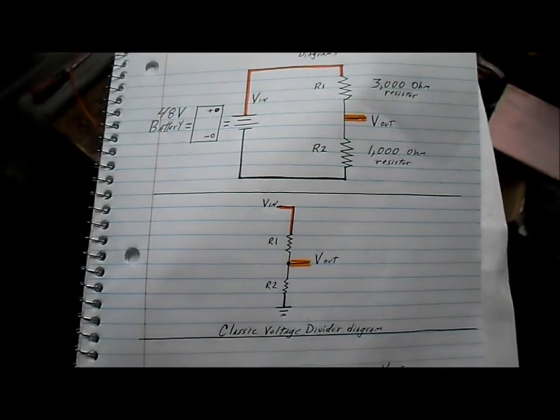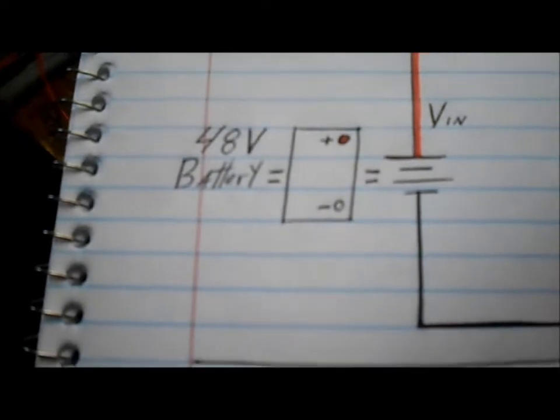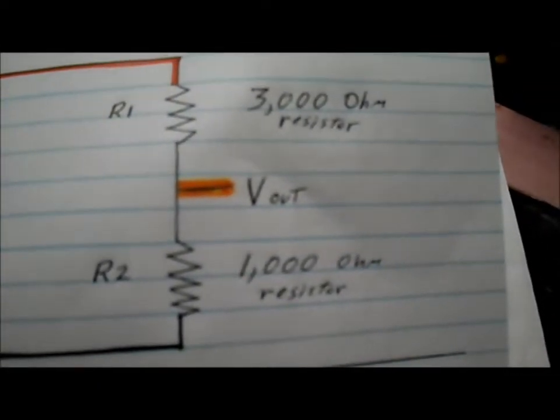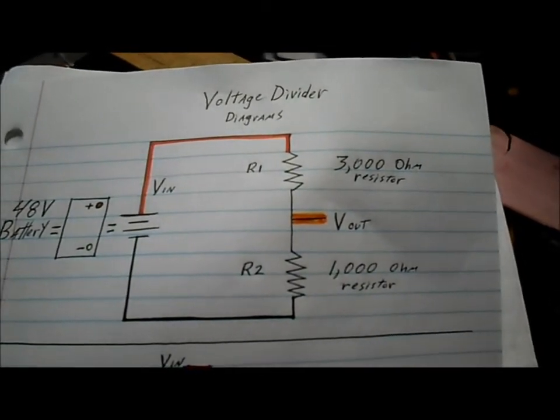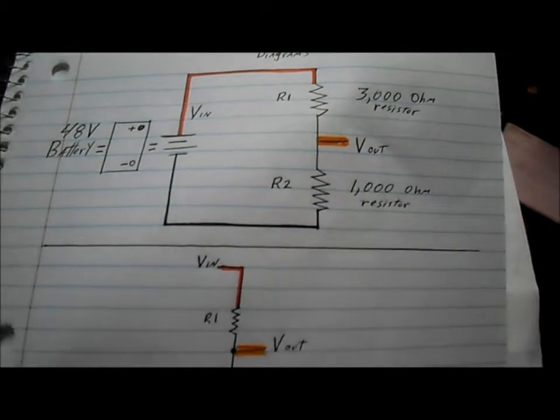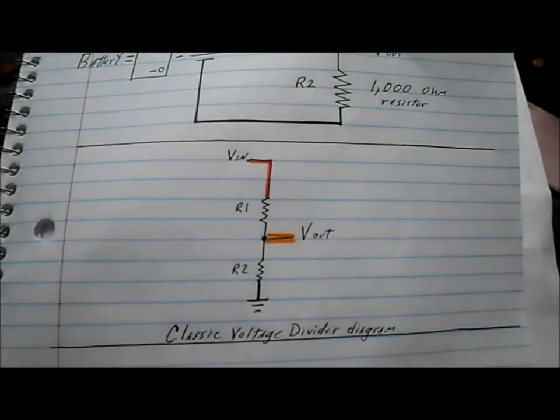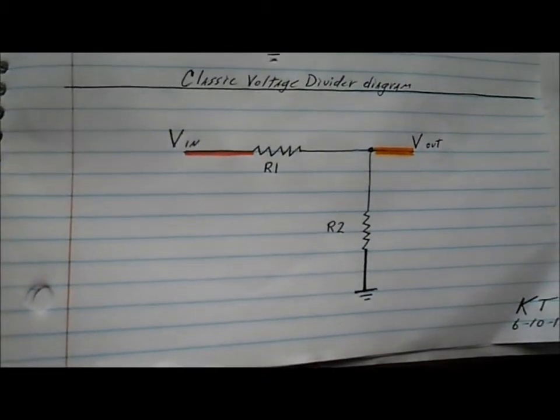Working on a voltage divider today to divide a 48-volt battery pack to have a 12-volt output, that way we can run a small meter. That's a classic voltage divider diagram. That's another way to draw it out.